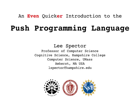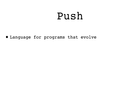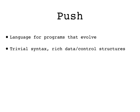I'm Lee Spector and this is an even quicker introduction to the Push programming language. Push is a language for programs that evolve by random variation and selection, not for programs that humans write directly. Push is unusually simple in terms of syntax, which makes it easy to randomly generate and change programs. The surprising and useful thing is that Push's simplicity doesn't prevent it from expressing programs that use complex data and control structures.